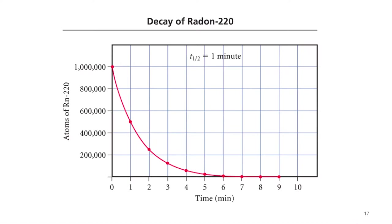So if you start out with a million, after one minute you've got 500,000, 250,000, 125,000, and it just keeps going down and down. So a very short half-life. So what does that mean about the stability of radon-220? It's pretty unstable. If you've got a short half-life, it's fairly unstable.